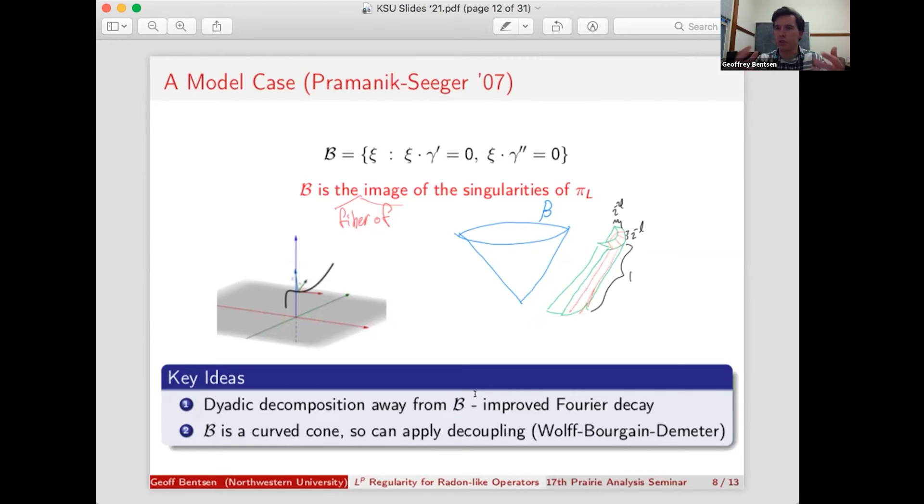So first off, we need that as we get away from B, our Fourier decay increases. In other words, in terms of a general local radon operator, you need improved L2 regularity on these pieces that are decomposed away from the set of singularities of pi L. And the other thing that we need is these fibers to form curved cones so that we can try to apply decoupling.